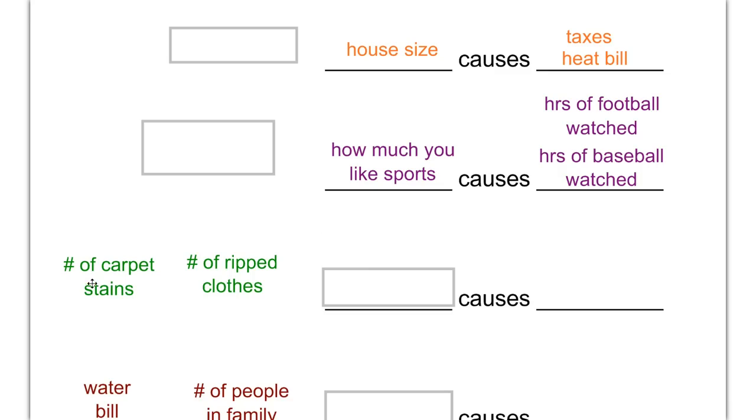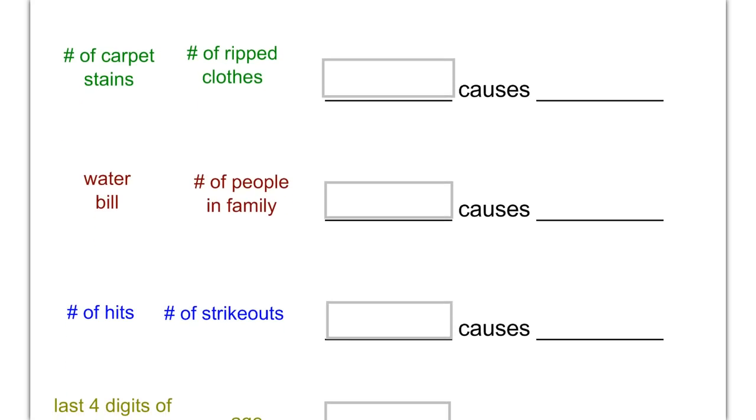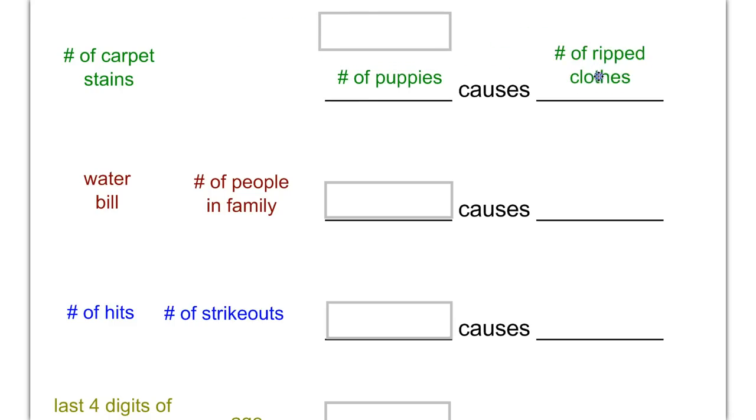In this example, we have number of carpet stains and number of ripped clothes. If you're in my mindset a little bit, those two things come from one cause, the destructive little puppy in the room. So the number of puppies you have will probably determine how many of your clothes are ripped. It will also determine how many of the stains that you have on your carpet. Because carpet stains don't cause your clothes to rip. Ripped clothes don't cause carpet stains. But puppies or other animals in your home definitely could cause both.